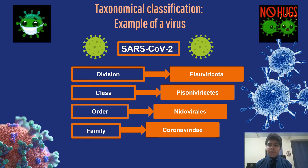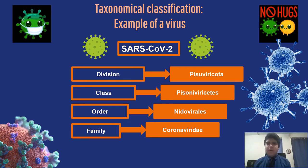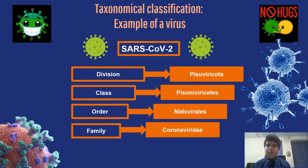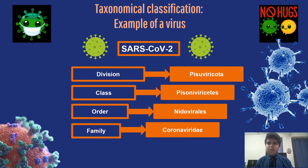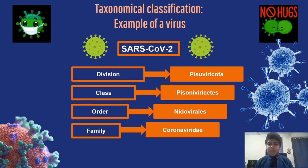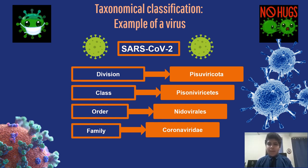Finally, we have an example of taxonomic classification using a specific virus: SARS-CoV-2, the Severe Acute Respiratory Syndrome Coronavirus 2, responsible for the global pandemic. This virus belongs to the division Piscanibiridae, containing RNA viruses; its class is Paisovirinisets, containing positive single-stranded RNA viruses; its order is Nidovirales, which includes viruses affecting animals and humans; and its family is Crohnabiridae, containing viruses that produce gastrointestinal and respiratory diseases. For the complete taxonomy of SARS-CoV-2, visit the webpage in the references. Thanks for watching.